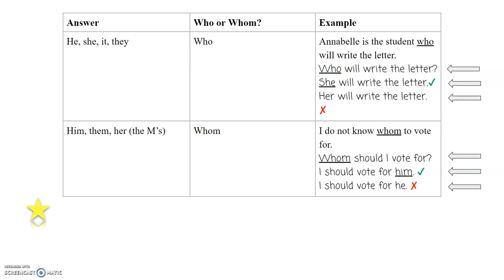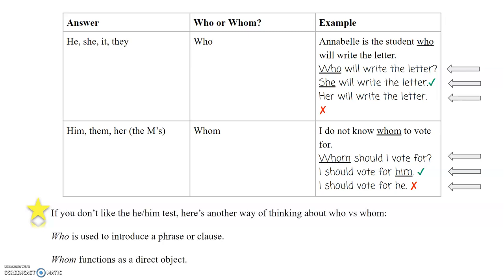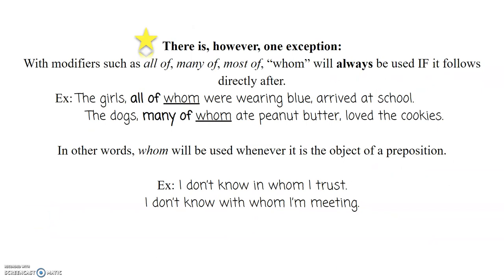If you're into knowing the technicalities of English, and that's a better way for you to think about this, you can remember who and whom this way. Who is going to be used to introduce phrases or clauses, versus whom, which is always going to be the object of something. Usually the object of a preposition is what we're going to see. So in these sentences, she was the woman who started the company. Who started the company is describing our woman, that's a clause. Versus, he is the teacher for whom I taught, whom is the object of the preposition for, making the prepositional phrase, for whom.